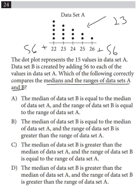So that means that the median of data set B is not equal, it is greater, and the range of data set B is equal. Therefore it cannot be answer D. It must be answer C.